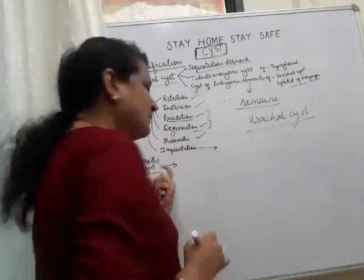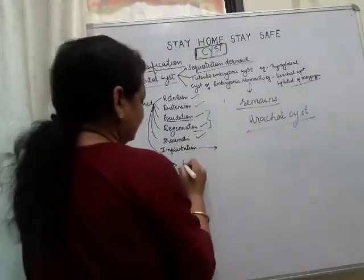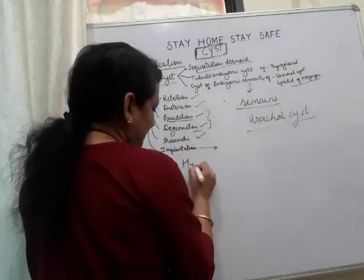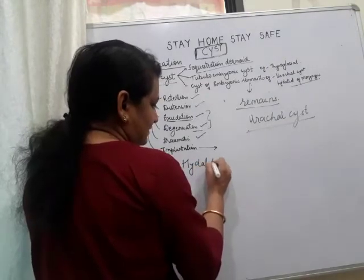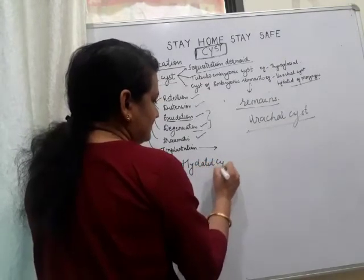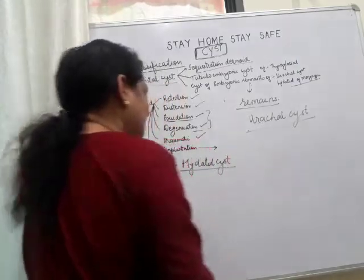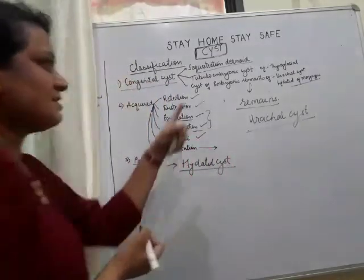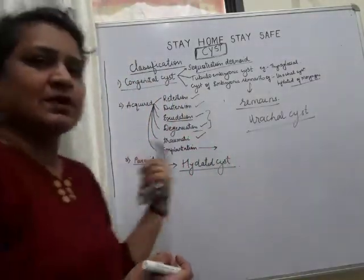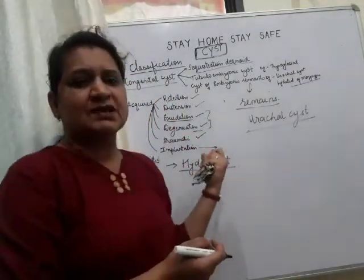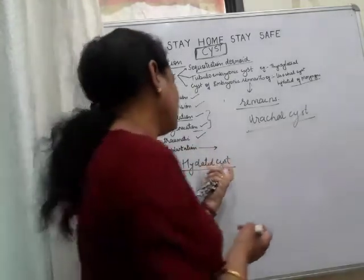The third classification is parasitic cysts. The best example of a parasitic cyst is the hydatid cyst, which is asked separately as an exam question. Sebaceous cyst and dermoid cyst are also frequently asked — we will cover those later.